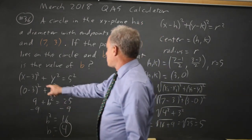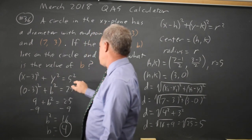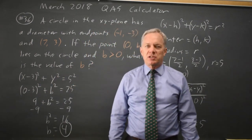And if I check that, 0 minus 3 squared is 9. 4 squared is 16. 9 plus 16 is 25. It is a point on the circle.